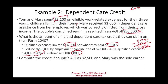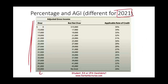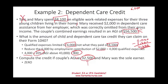Now consider a modified scenario: if the couple's AGI was $32,500 and Mary was the sole earner while Tom was not working. Even though $32,500 might suggest a higher credit percentage, there is no credit available here. Since Tom is not working, he could be caring for the child himself, so the employment-related expense requirement is not met. Both spouses generally need to be working or otherwise qualify; with one spouse unemployed, the credit does not apply.